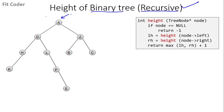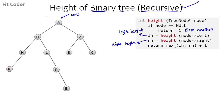Initially we pass the root node A to the function. We check if the node is null — if so, that means it is a null tree and we return -1; this is the base condition. Then we calculate the left height (LH) and right height (RH), and return the maximum of LH and RH plus 1.